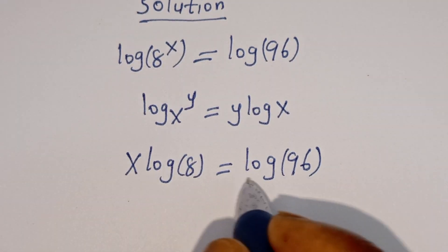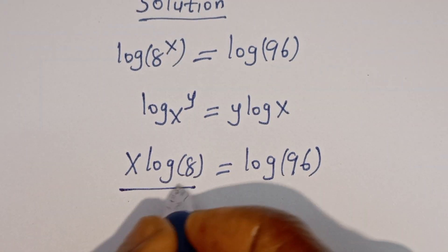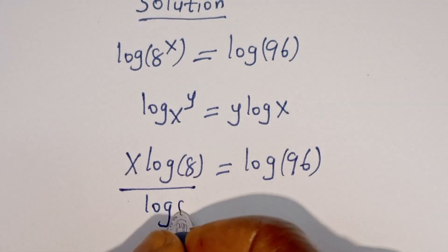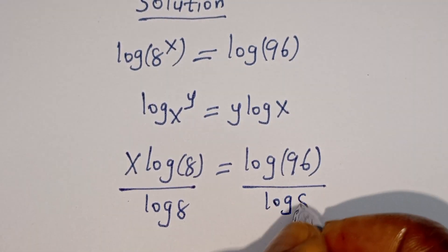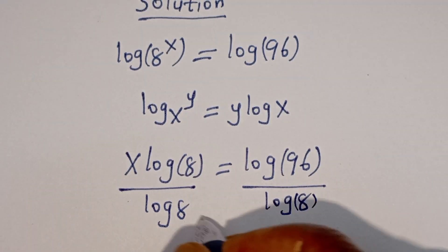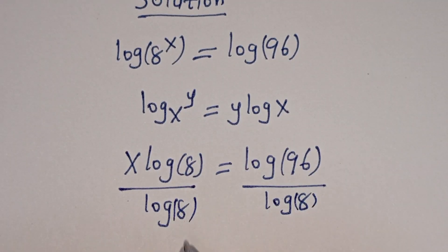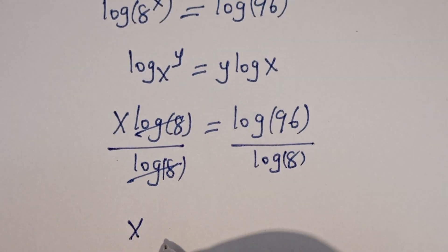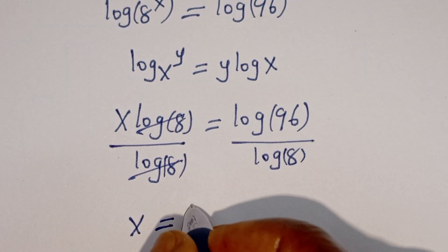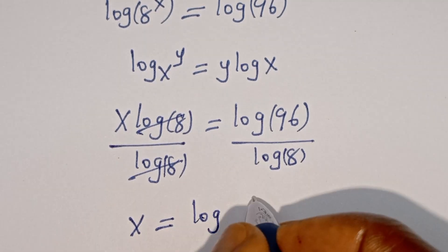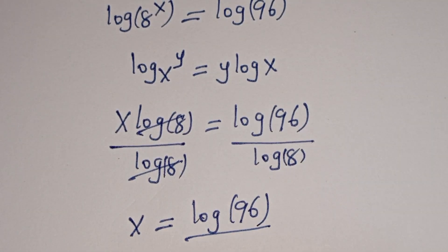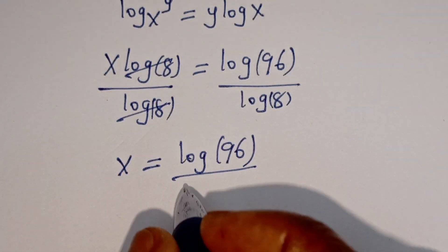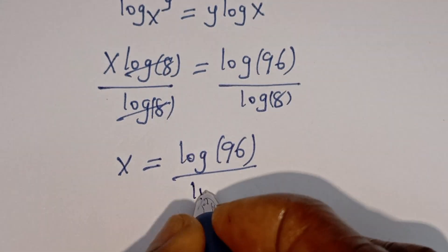Let's divide both sides of this equation by log h. This divided by log h and this divided by log h — these will cancel. So s is equal to log 96 divided by log h.